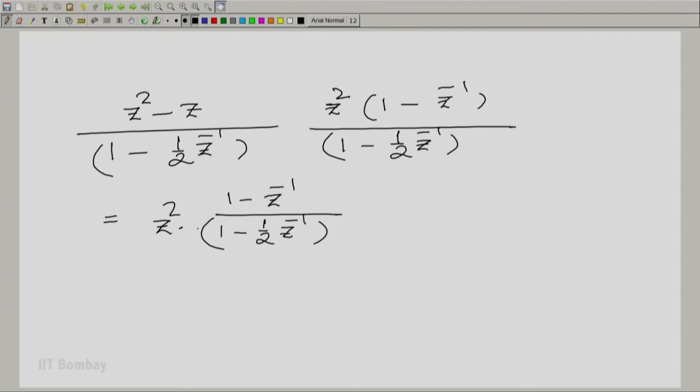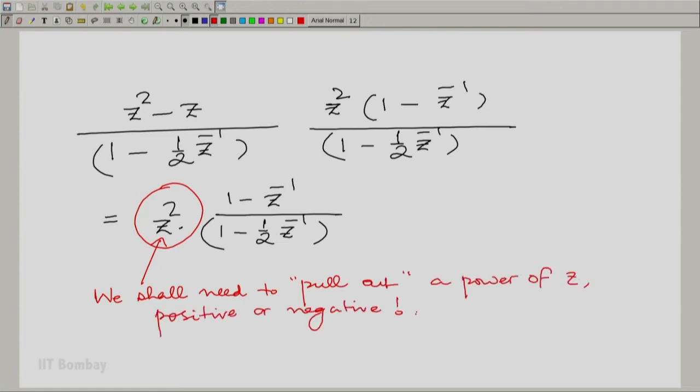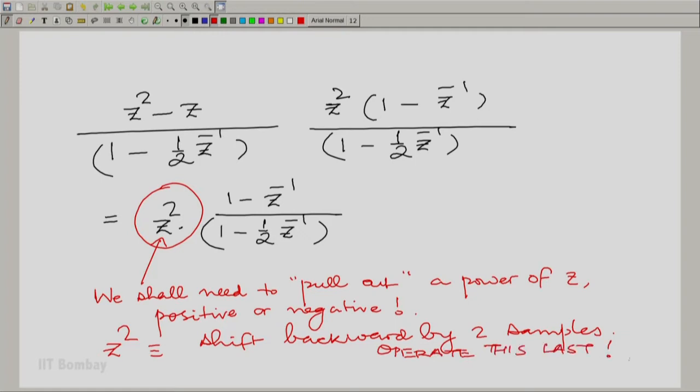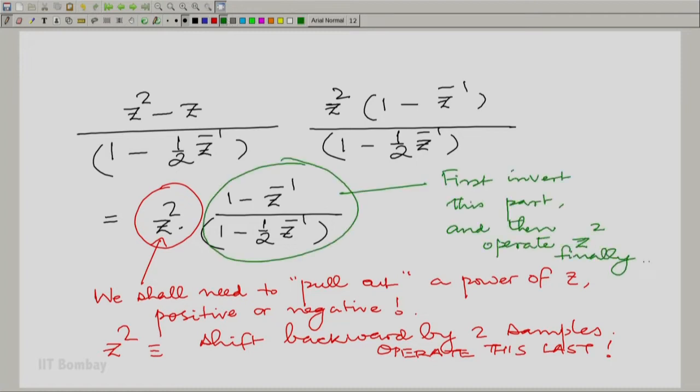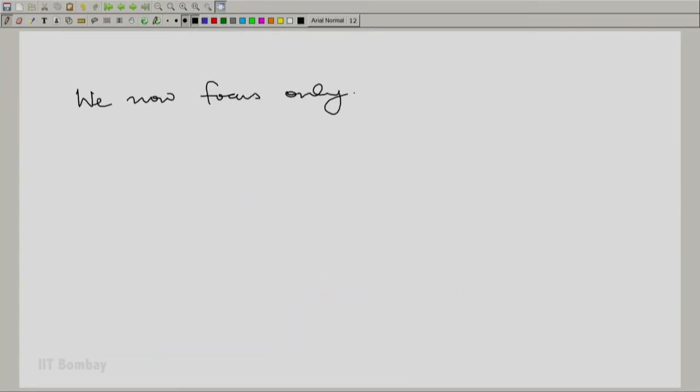Now, you know this—as you can see, you will need to pull out a power of Z. It could be a positive or negative power of Z. Now, all that this does, this power of Z, is to cause a shift. For example, Z squared essentially means shift backwards by two samples. So, we can operate this last. After inverting the rest of the Z-transform, we can operate that power of Z. So, let us assume without any loss of generality that we indeed have a rational function of Z inverse.